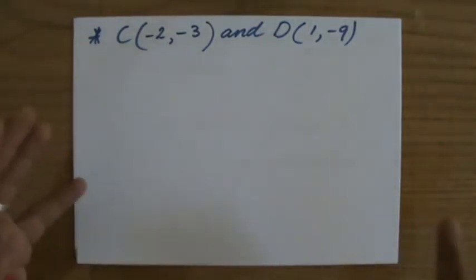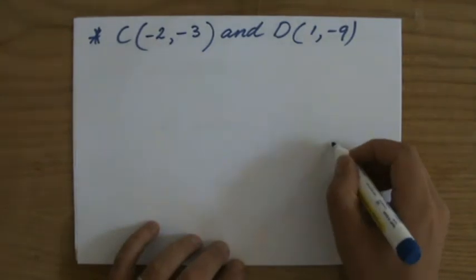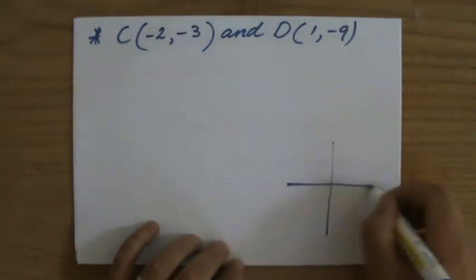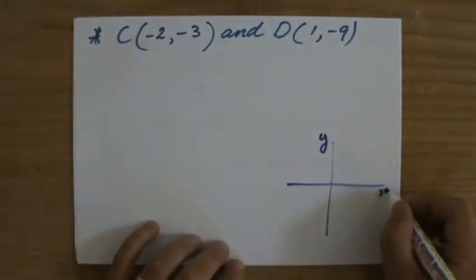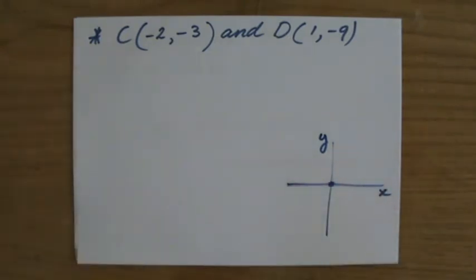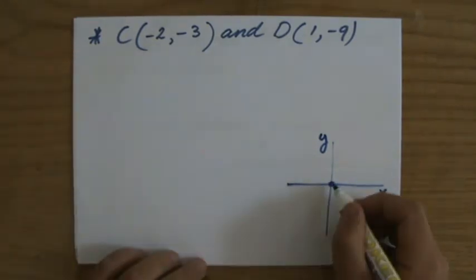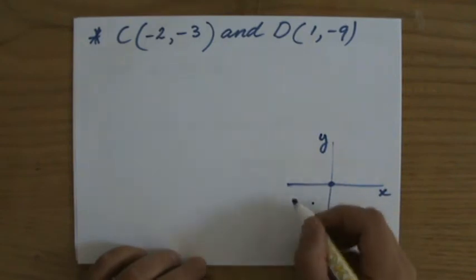Before I start, I just quickly sketch what is going on, Y and X axes, because that gives me an idea what I'm looking for. C is (-2, -3), that could be here.